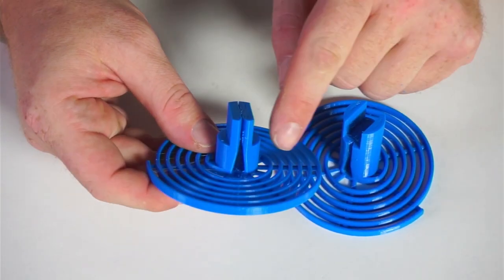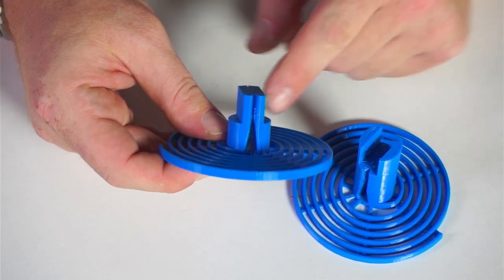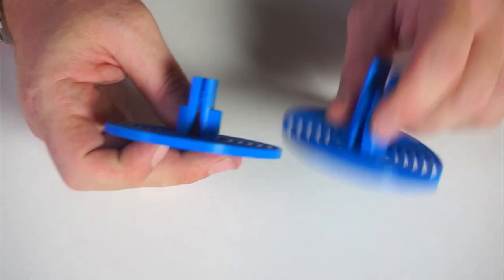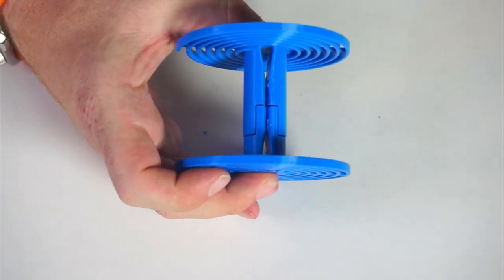Now we're going to put the two pieces together. We're going to make sure that the rounded entry to the clip, this side, is lined up on both. Put them together and squeeze.